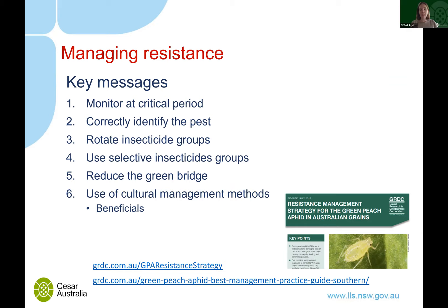To limit resistance as much as possible, there are six key things to consider: monitor at the critical period; correctly identify the pest; rotate insecticide groups — using the same active repeatedly is how resistance develops because individual survivors pass resistance on; use selective insecticide groups where possible so natural enemies can help with pest control; reduce the green bridge; and use cultural management such as beneficials. There are also useful documents on green peach aphid resistance available — I'll send those links out.